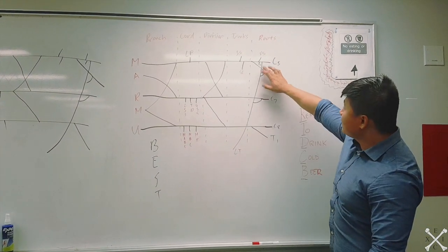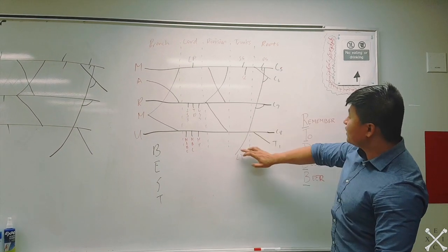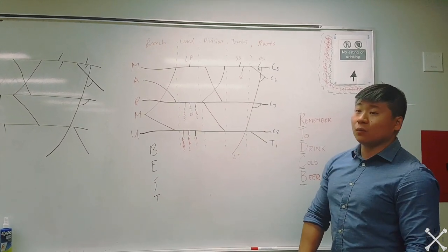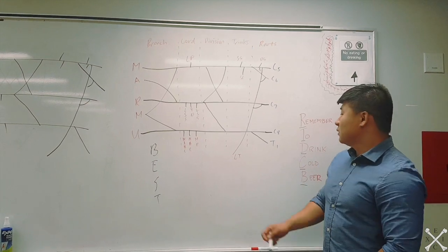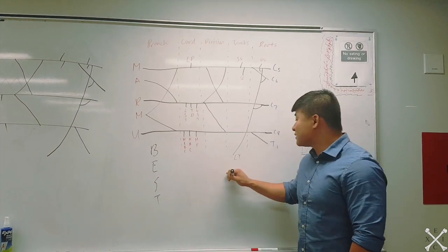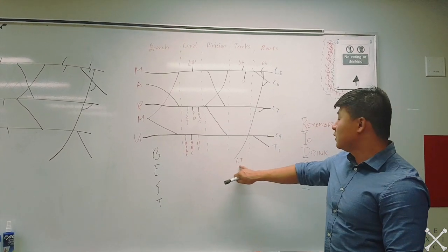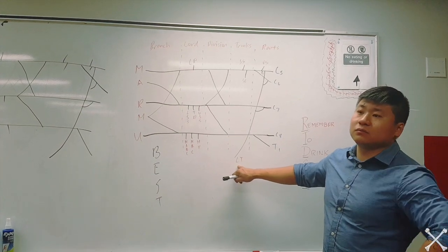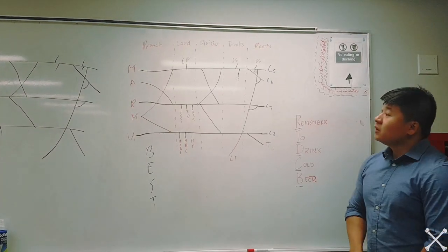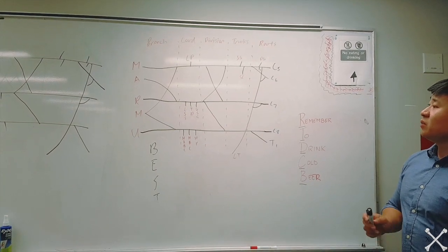When this nerve is damaged, you have something called winged scapula. That's because your serratus anterior is not holding your scapula in the right place. So that is your brachial plexus.